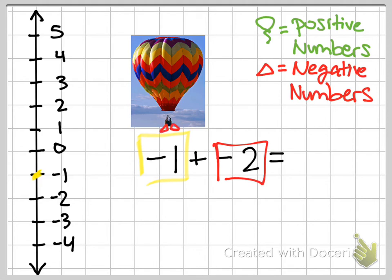All right, so if we're adding two weights to the bottom of the balloon, we're going to get even lower than we already are. So we need to go down in a downward direction, two spaces, and that ends at negative three. So my answer for this one is negative three.